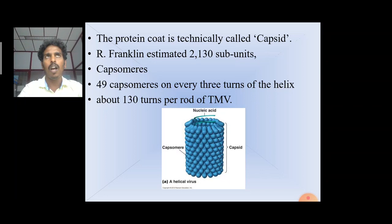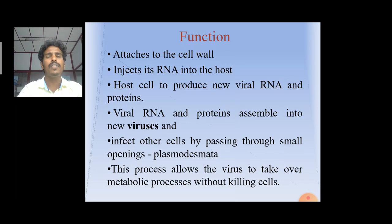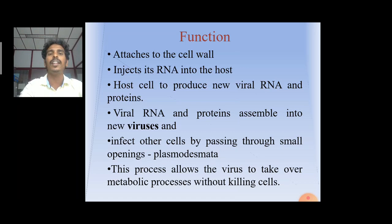The function of tobacco mosaic virus: it attaches to the cell wall and injects its RNA into the host. The host cells then produce new viral RNA and protein, which are assembled into new viruses. These viruses infect other cells by passing through small openings called plasmodesmata. This process allows the viruses to take over metabolic processes without killing the cells.